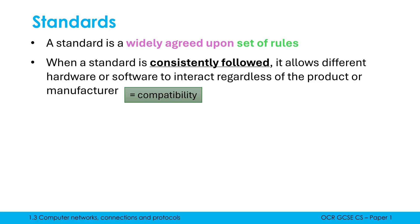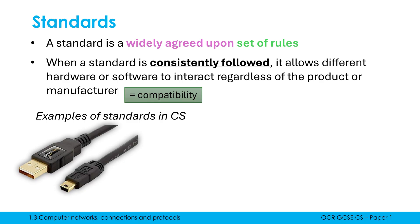Compatibility is so important given how many different manufacturers there are and the fact that different countries have different systems. We need compatibility to make things like the internet work smoothly. Standards exist elsewhere in both computer science and real life — it's not only networking.